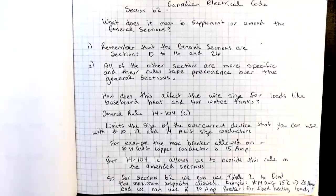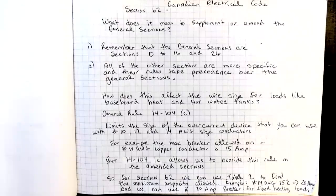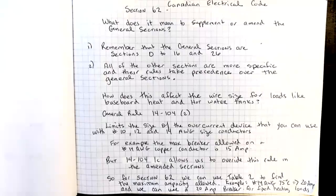So how does this affect the wire size for loads like the baseboard heat and hot water tanks? If we look at a general rule, 14-1042, that rule limits the size of the overcurrent device that you can use with number 10, number 12, and number 14 AWG size conductors. For example, using 14-1042, the maximum breaker allowed on the number 14 AWG copper conductor is 15 amps, even though when we go to Table 2 and look in the 75-degree column, a 14 AWG copper conductor is good for 20 amps.